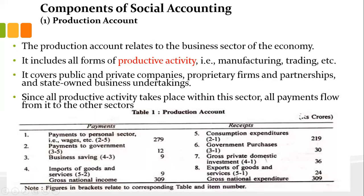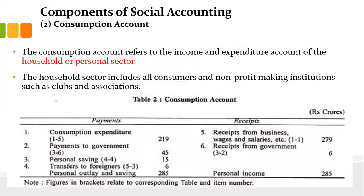The second component is the consumption account, which refers to the income and expenditure account of households and the personal sector. The household sector includes all consumers and non-profit-making institutions such as clubs and associations. It is cumulative. Payments from households include consumption expenditure, taxes to government, personal savings, and imports such as a foreign watch — transferring money to the foreign sector.